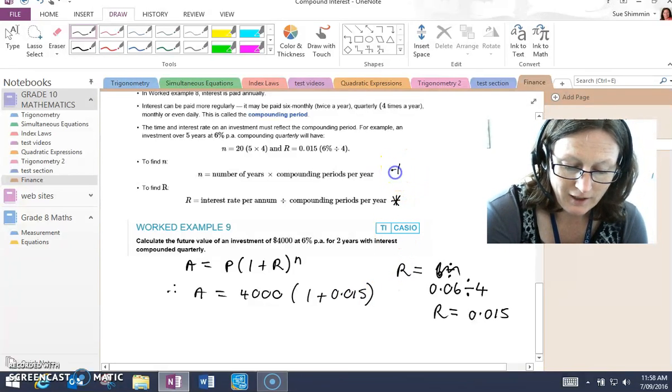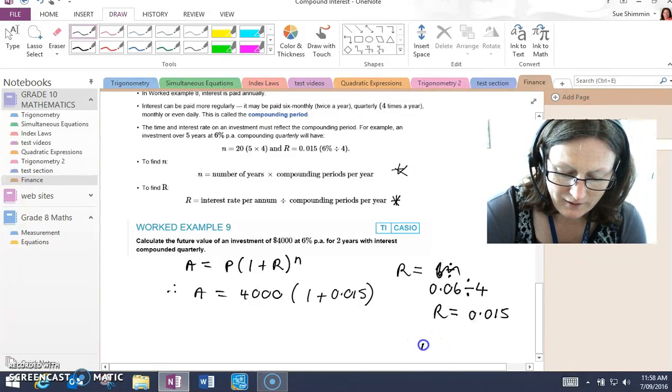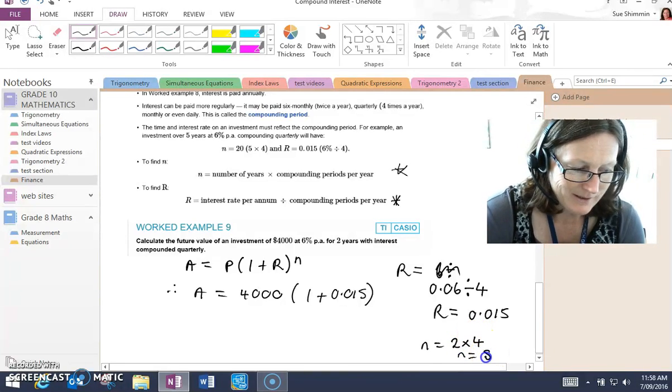What do we put for N? To find N, N is the number of years times the compounding periods. So for N, it's two years times four compounding periods per year. So N is eight.